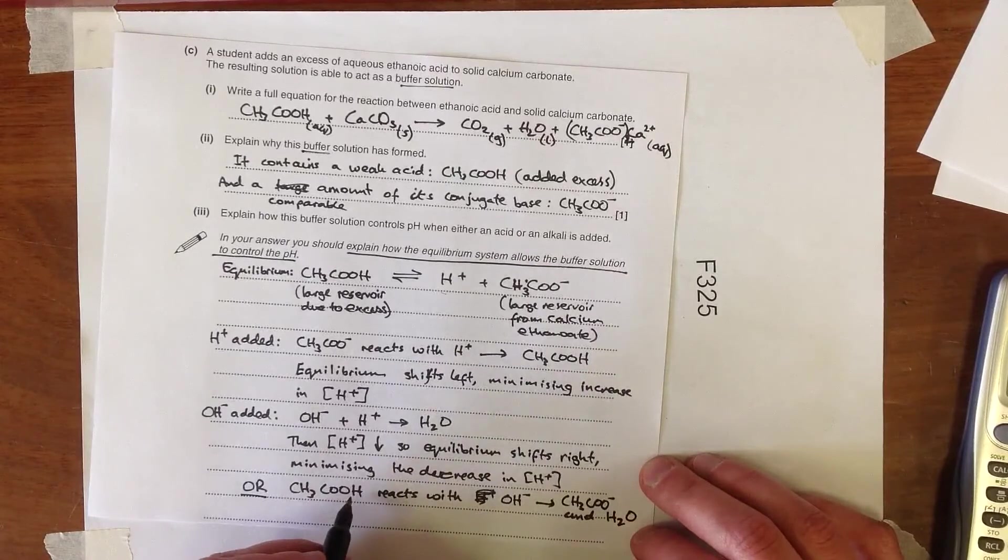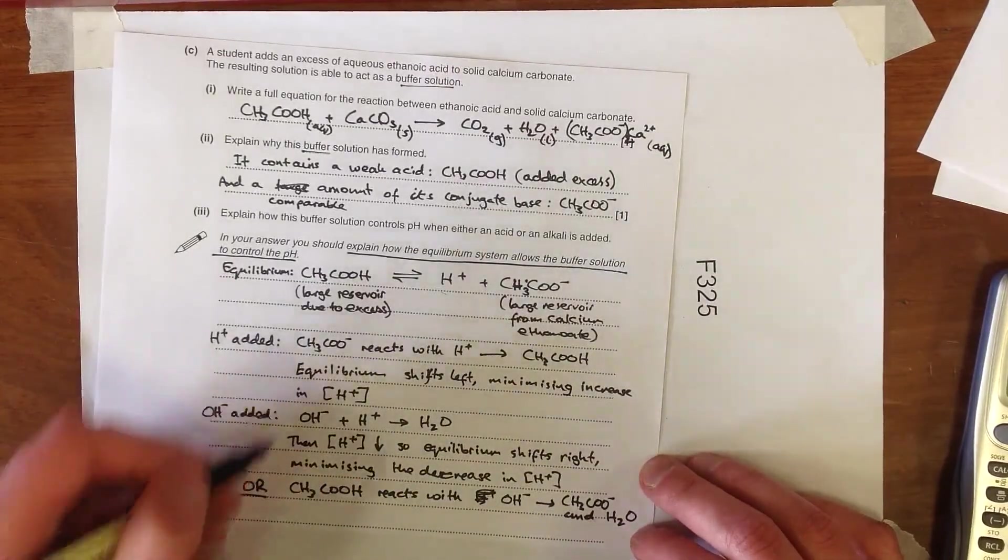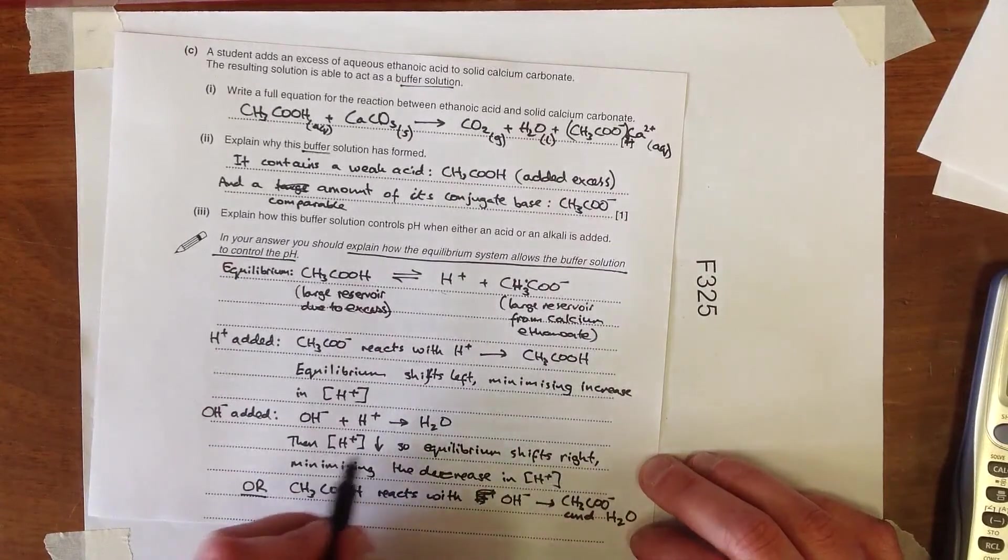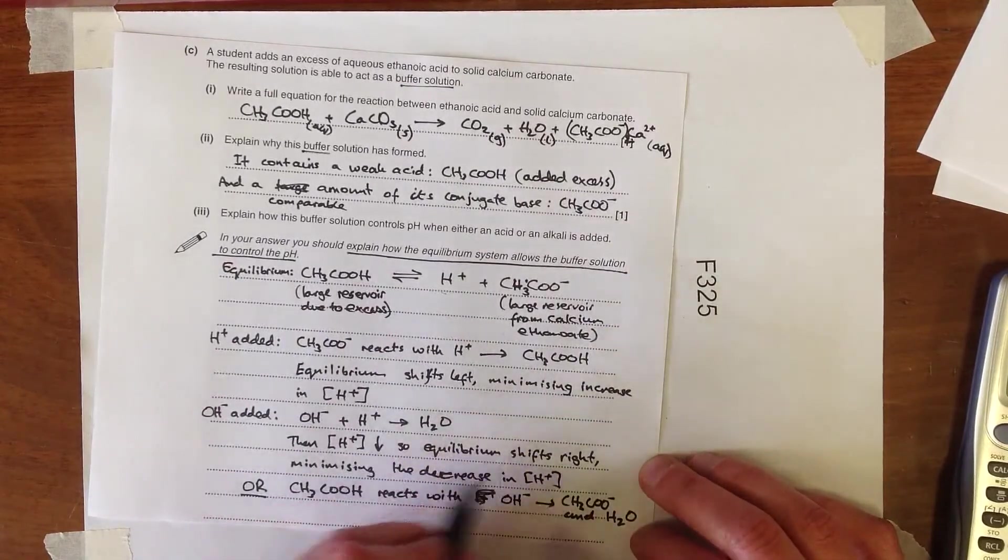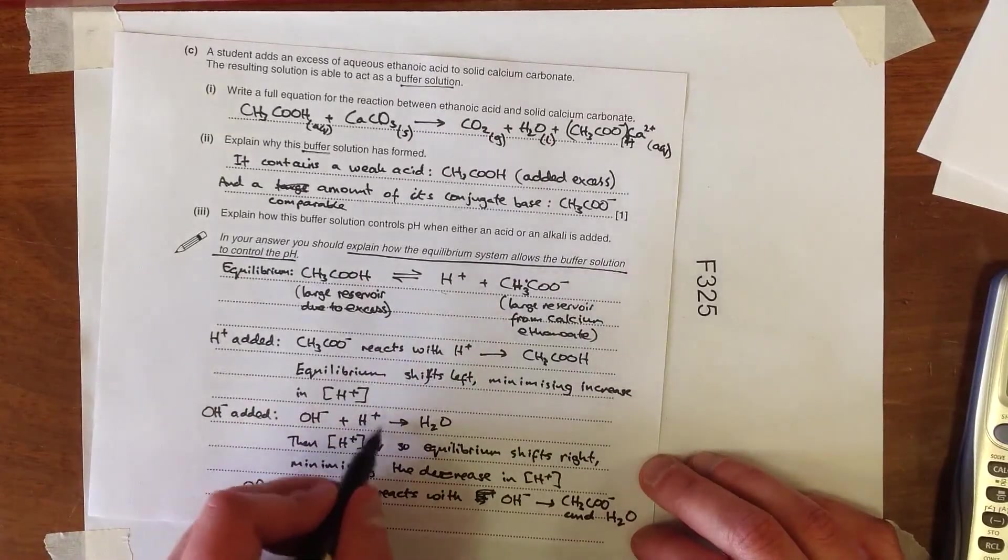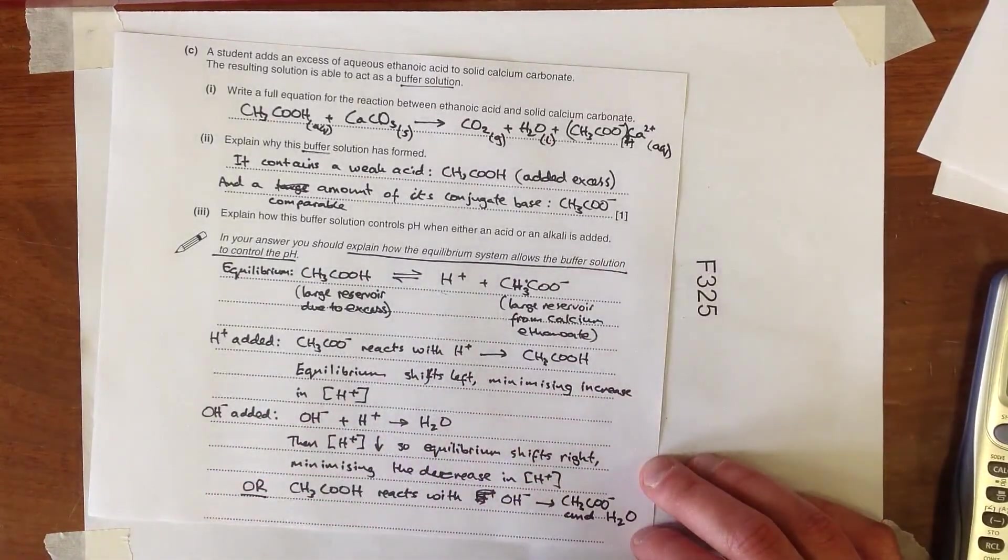So essentially the overall result of this is that we've mopped up our alkali. So this is probably the most conventional explanation, but this one could work, though it's more difficult to think how we could show this type of effect on the equilibrium. So probably the best way to handle any OH- is that it does react with the H+, forming water, and hence the equilibrium shifts in that direction.